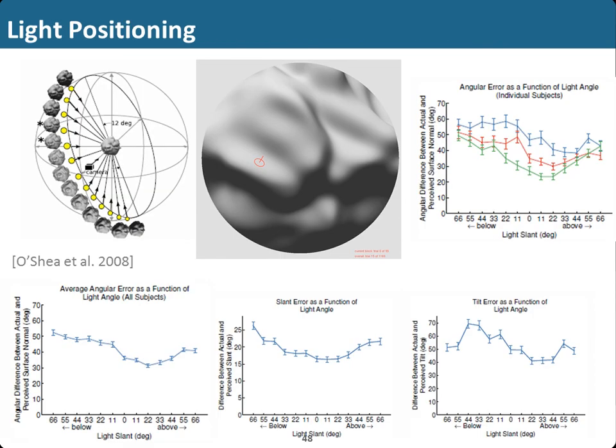Another question is why illustrators usually place lights in the top-left corner. A study was conducted modifying the light position in the azimuth direction, and using the same gauge-setting task. They found that the best precision of placing gauges is when the angle is between 20 and 40 degrees above zero. So having a light from above 20 to 40 degrees is best for shape perception — and that is why illustrators place the light source above.